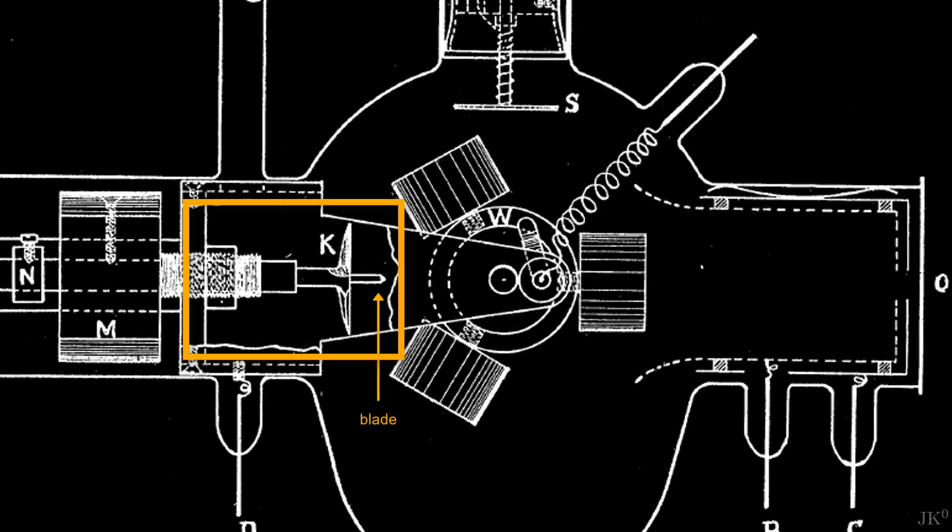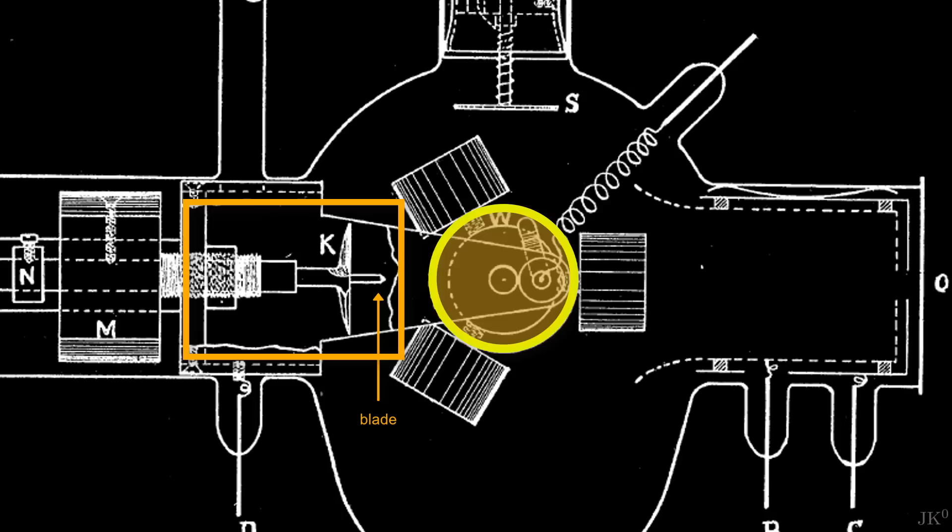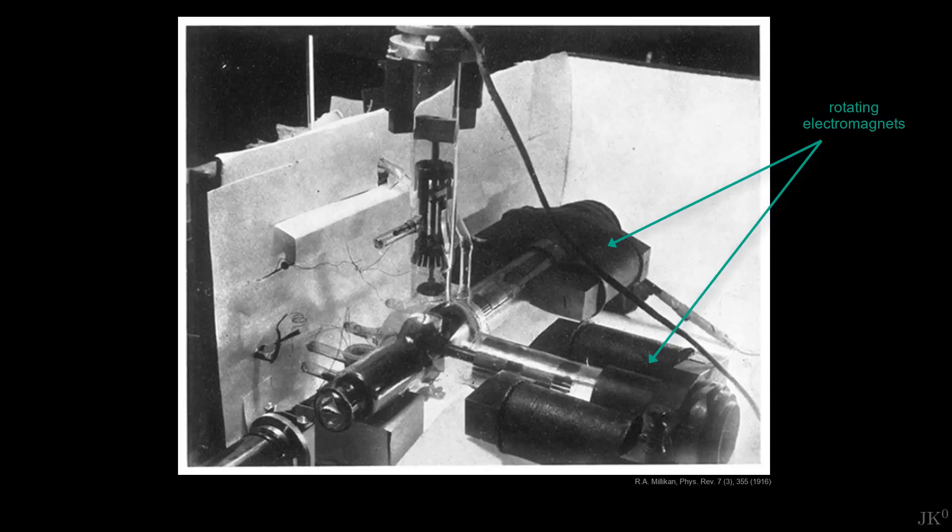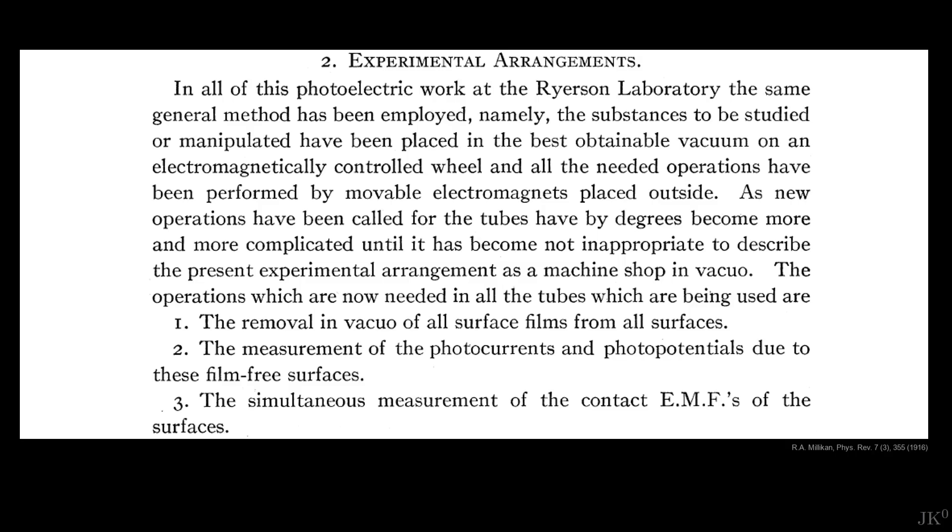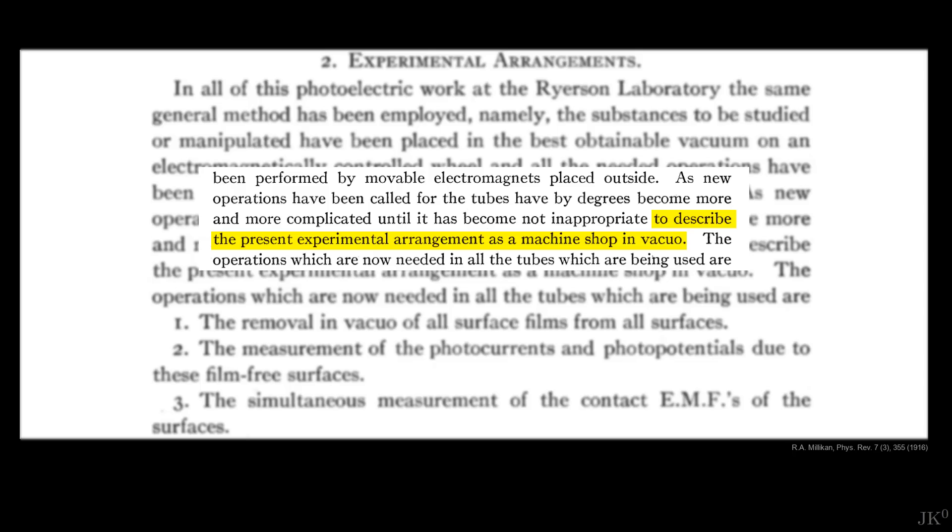Millikan designed a way to machine the material inside a vacuum chamber. A blade to scratch the metals before each measurement, as well as the wheel with different metals were controlled from the outside by a collection of rotating electromagnets. The whole contraption is a marvel that Millikan describes in detail on his paper and calls it a machine shop in vacuum.